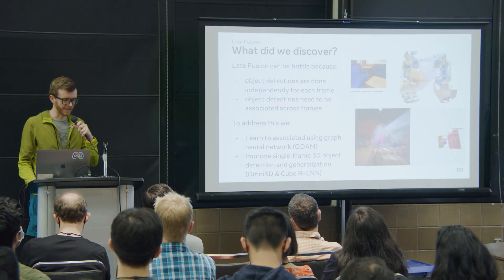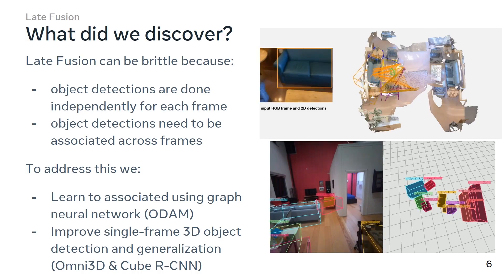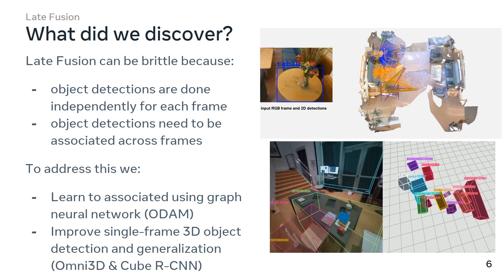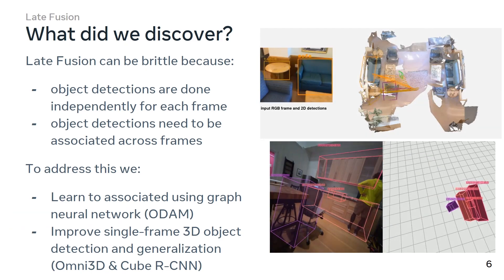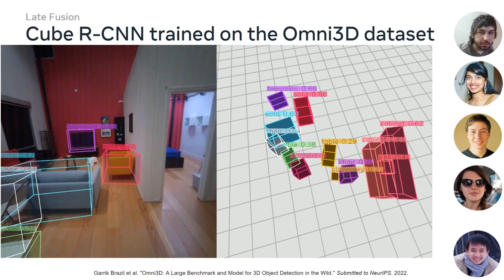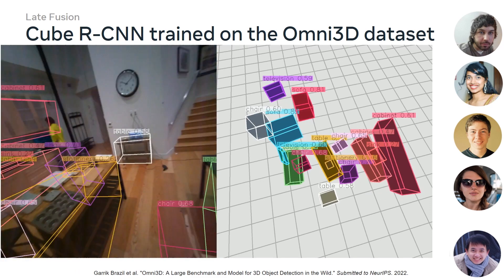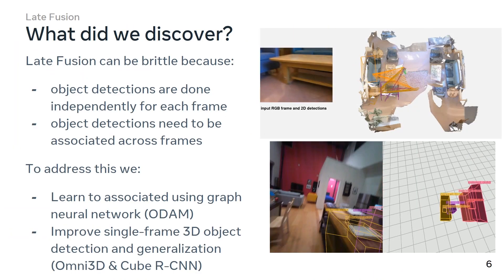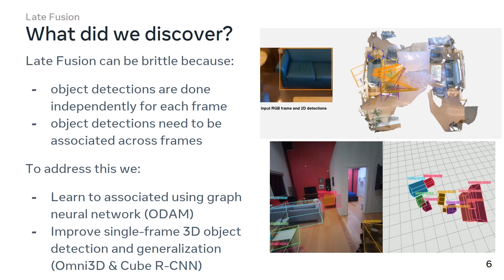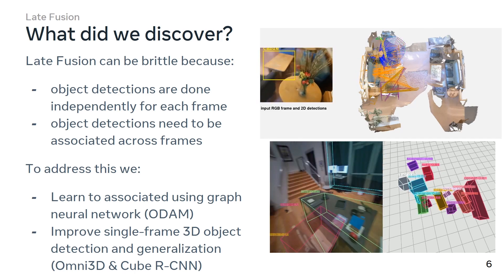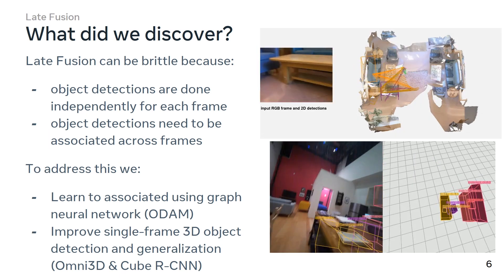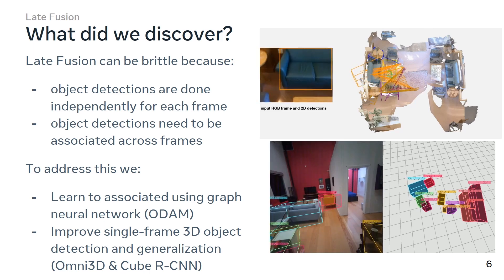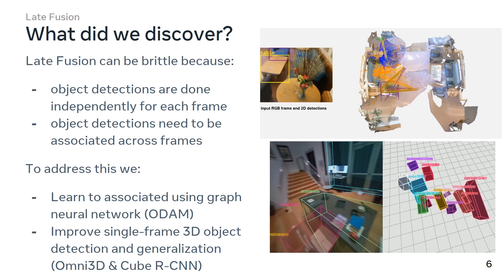So what did we discover on the late fusion route? Late fusion can be brittle because object detections are done independently per frame, so the object detector does not have access to all the multi-view information that we actually have. You might commit to wrong object detections. Also, you need to associate object detections across frames, which can introduce further problems. To address this, I've shown work that learns how to associate detections using a graph neural network — that was the ODAM work. And improving the 3D bounding box detector itself makes association easier, which was the Omni3D and CubeRCNN work.